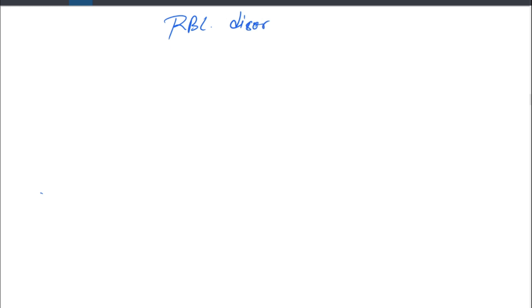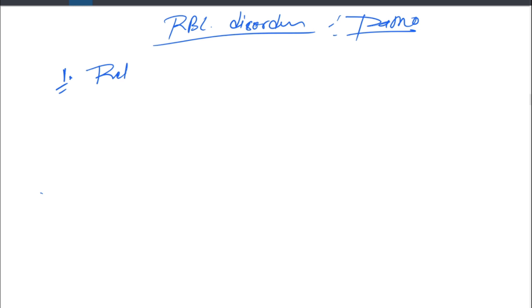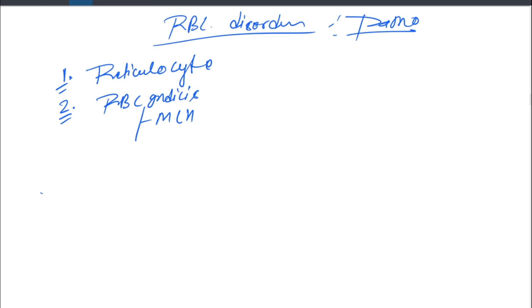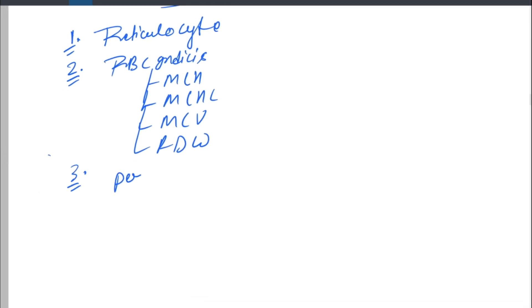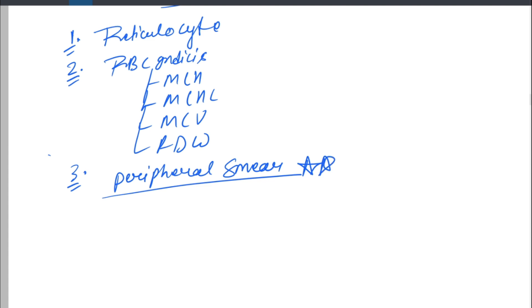Today I'll teach you about RBC disorders in pathology. We are going to discuss the RBC disorders in four parts: first, reticulocyte after a general RBC introduction; second, RBC indices like MCH, MCHC, MCV, and RDW; third, the peripheral smear — the most important topic, as maximum questions come from it; and fourth, anemia, its classification and general introduction.